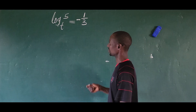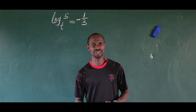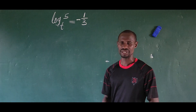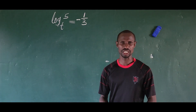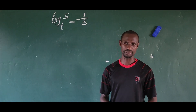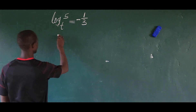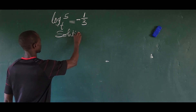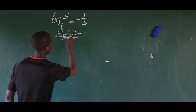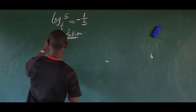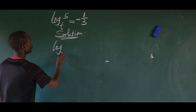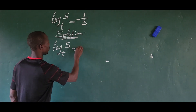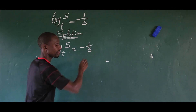How do we get the value of t? We can solve this challenge using two different approaches. We know that there is a strong relationship between indices and logarithms. Now let's take our solution here. The question again: we have log 5 base t, and this is equal to minus 1 over 3.